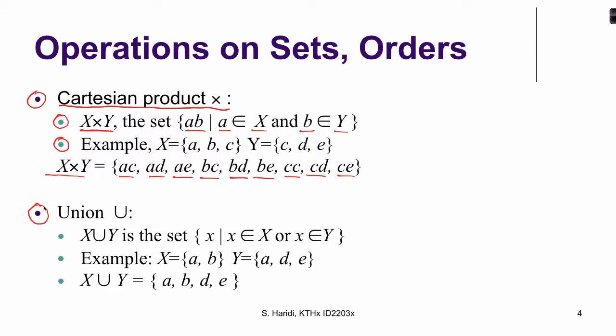So what is the union of two sets? The union of two sets X and Y is a set such that X is either an element of large X or X is element of the set large Y. So union of two sets combine all the elements together in another set. So here is an example where we have the set A and B and then the set A, D, and E, and the union will combine all the elements. So we have A and B coming from this set, D and E coming from this set, and A is already in both sets.